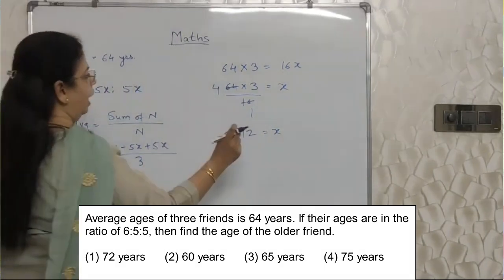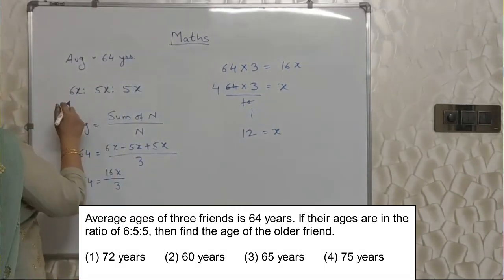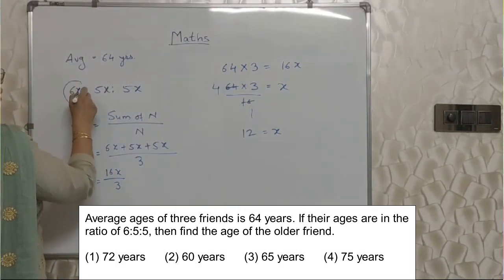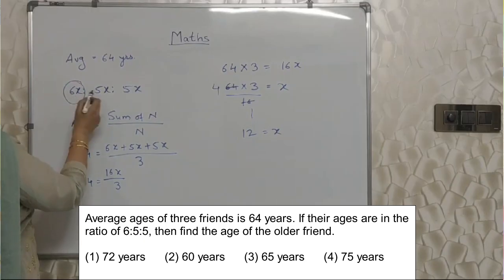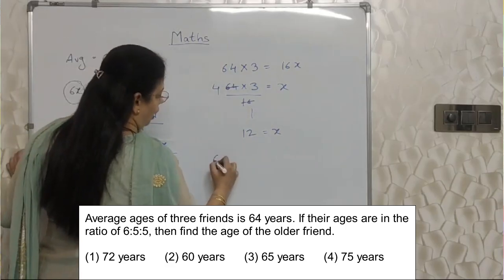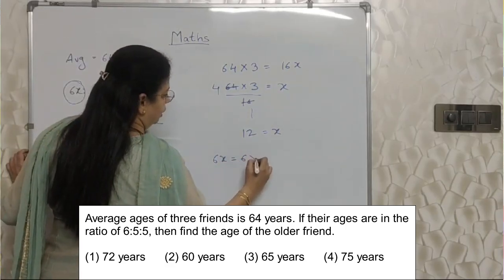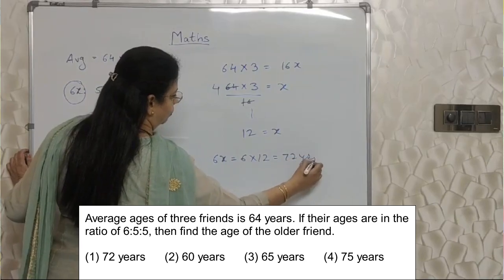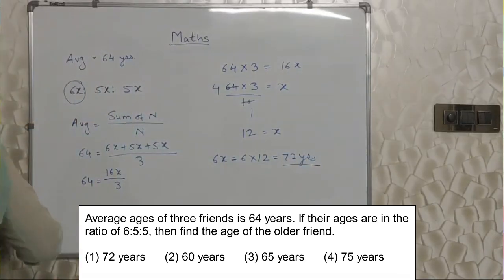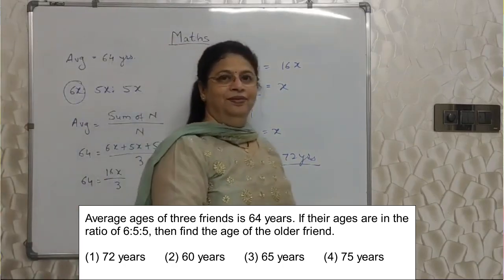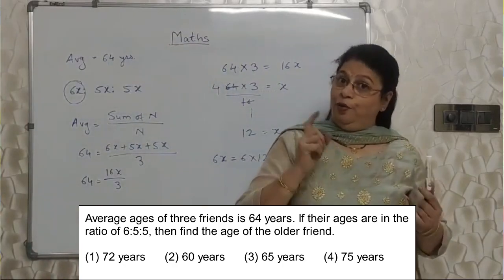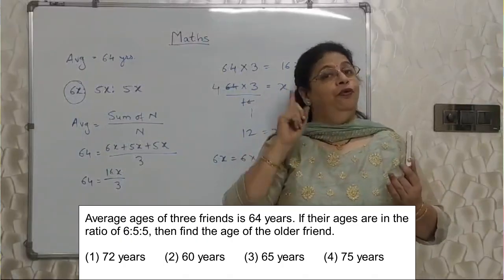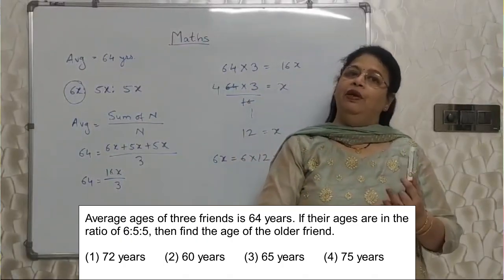Once we know x, we can find the eldest one. 6x is bigger than 5x, so that one is the eldest. They want the age of the eldest one: 6x equals 6 into 12 equals 72 years. Here the concept of average and the concept of ratio both play a very important role.